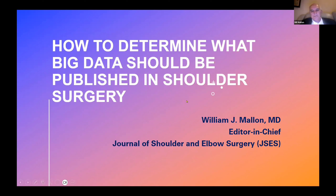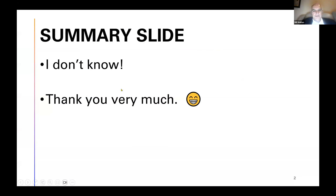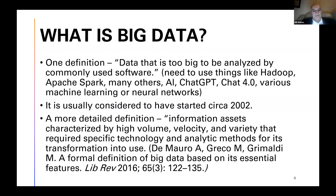Bill thanked the host and noted Chris said he might be debating against him. He prepared a summary slide — the answer to what big data studies should be published is 'I really don't know the answer to this.' He noted he's really going to be talking more about what Chris discussed — what he calls database mining studies. About 25-30% of articles submitted to JSCS are either systematic reviews or database mining studies because they're just proliferating.